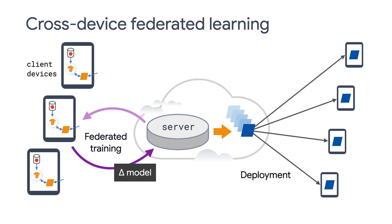Note that when the random subset of clients send data back to the server, they are sending only the model updates instead of sensitive user data. In this way, user privacy is preserved and the model is also trained. Now you understand how cross-device federated learning works.